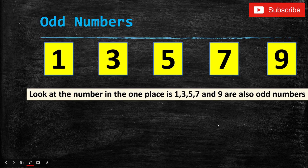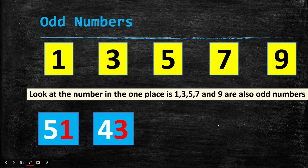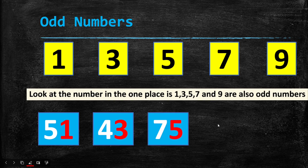I'll give you a few samples. First: 51 — in the ones place it is written 1, and 1 is an odd number, so 51 is an odd number. Next sample: 43 — in the ones place it is written 3, and 3 is an odd number, so 43 is an odd number.